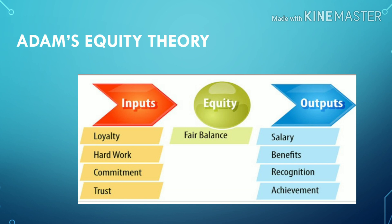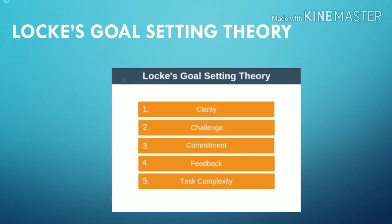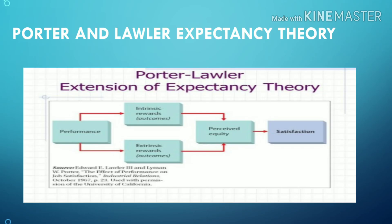The next one is Locke's Goal Setting Theory, proposed by Edwin Locke in 1960. Goal setting is linked to task performance. This theory states that specific and challenging goals, along with appropriate feedback, contribute to higher and better task performance. It includes five elements: clarity, challenge, commitment, feedback, and task complexity.